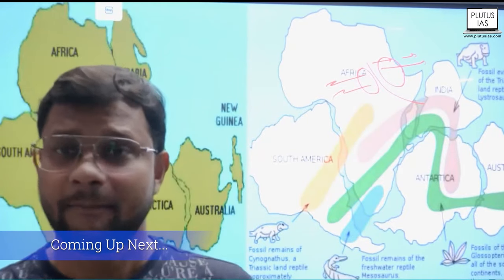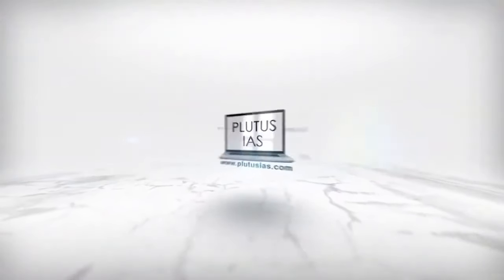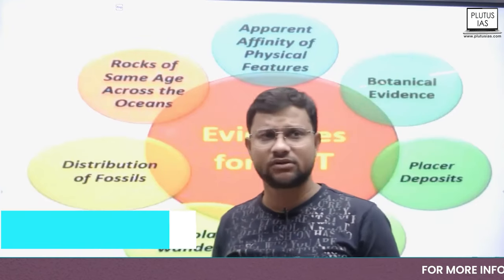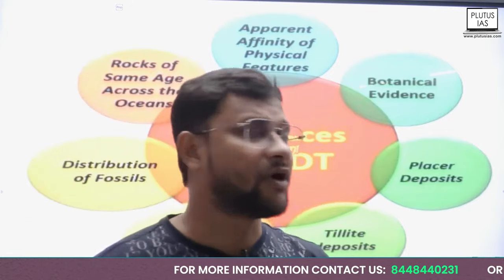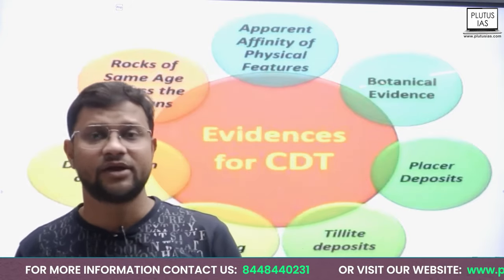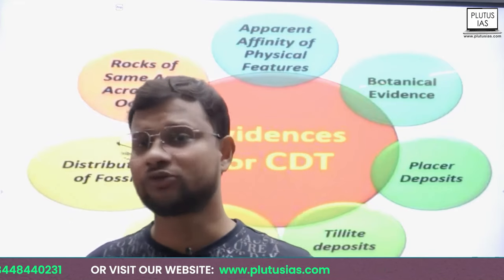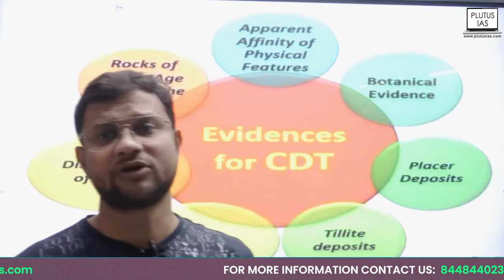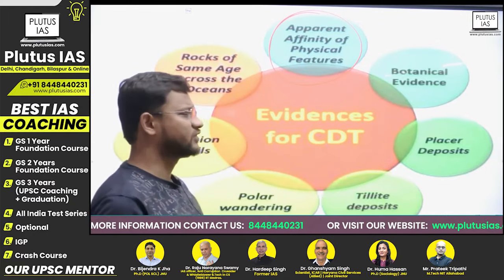Fossils, plants, and animals may show similarities. The scientific proposition is obvious. The theory is supported by scientific, mathematical evidence, fossil-based evidences, paleontological, geological, petrological. First, see the apparent affinity of physical features.